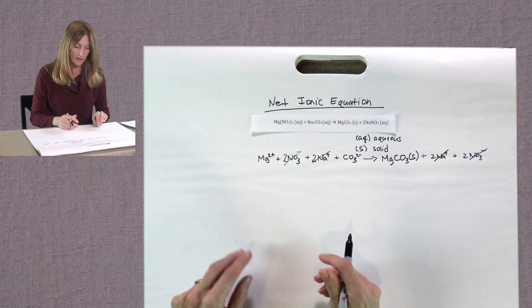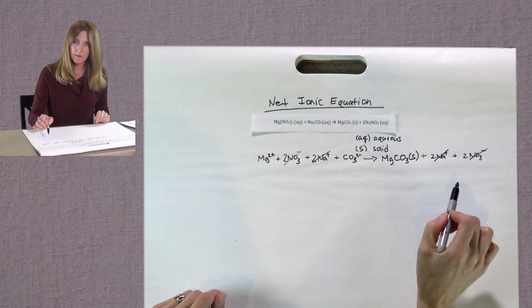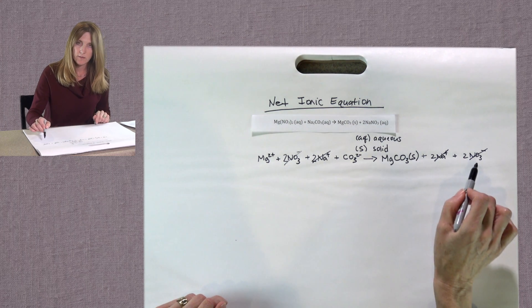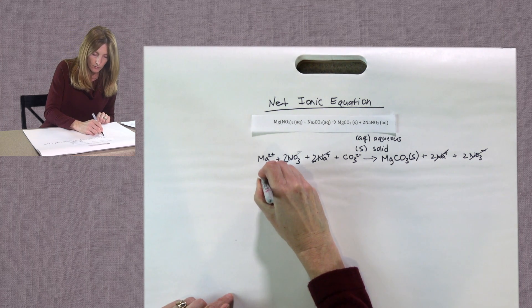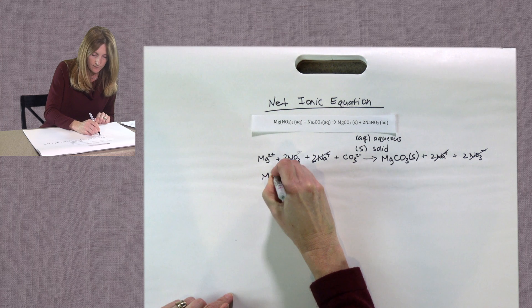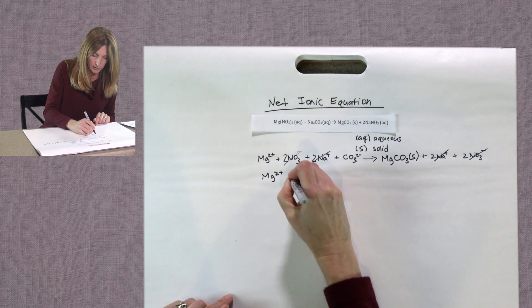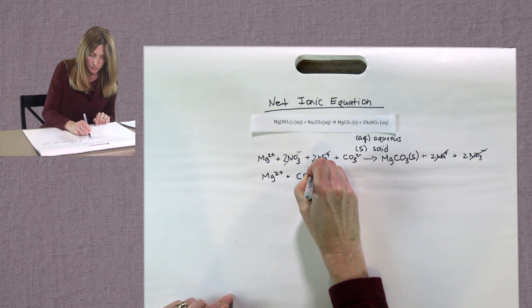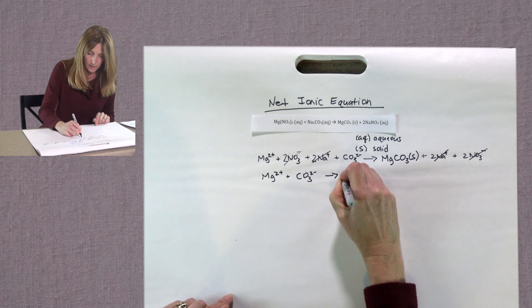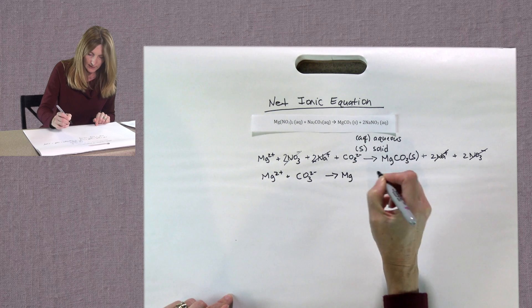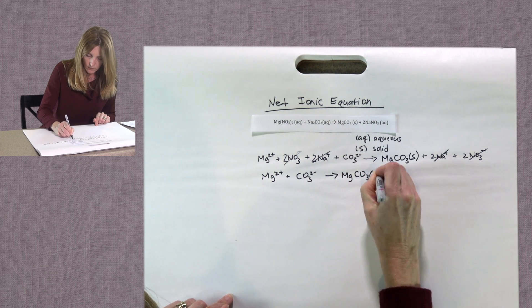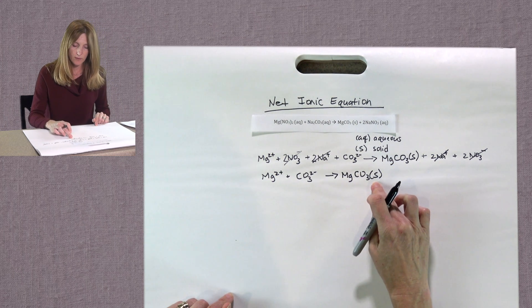So now to write the net ionic equation, we will rewrite this equation omitting all of these ions that we've crossed off. So our net ionic equation would be Mg 2 plus plus CO3 2 minus yields magnesium carbonate with the S after it showing the physical state.